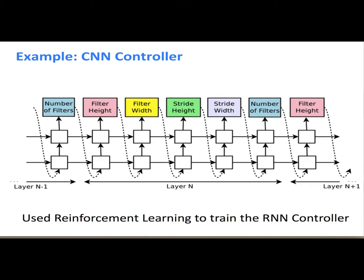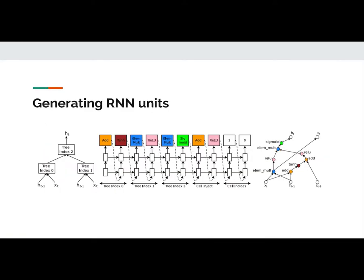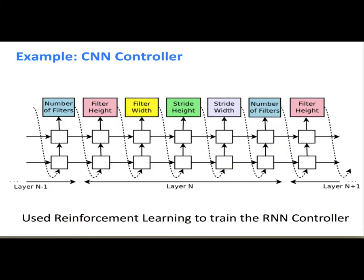For sampling architectures, in the CNN case, each output of the RNN controller represents a design parameter — for example, filter height, filter width, stride height, stride width, and number of layers for each layer. You can also apply this to RNNs, and doing so can lead to some very strange-looking designs compared to a standard LSTM.